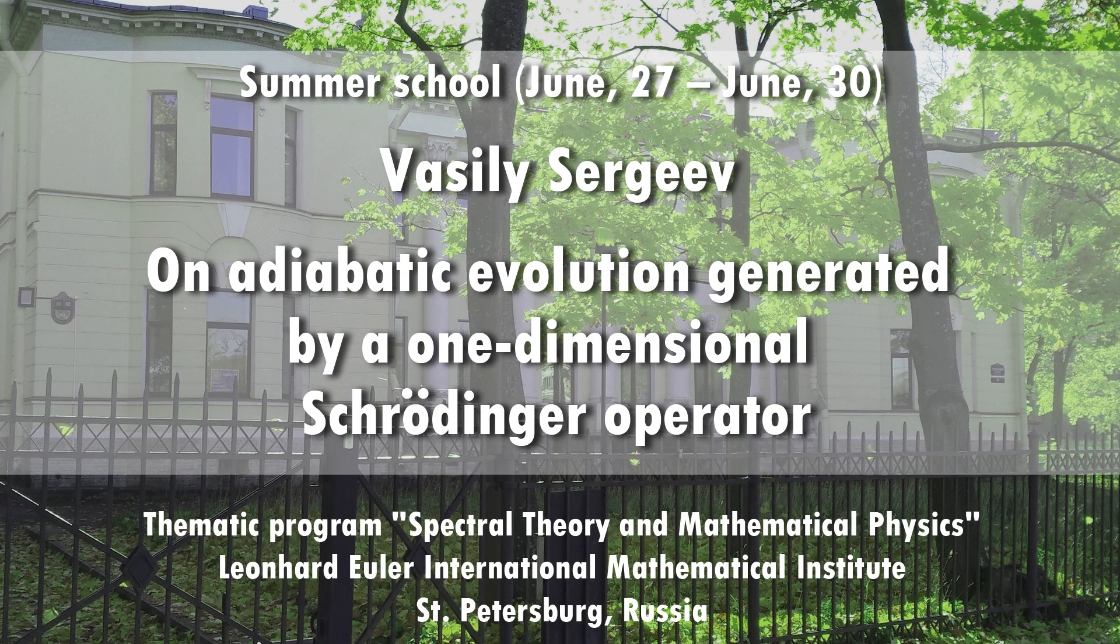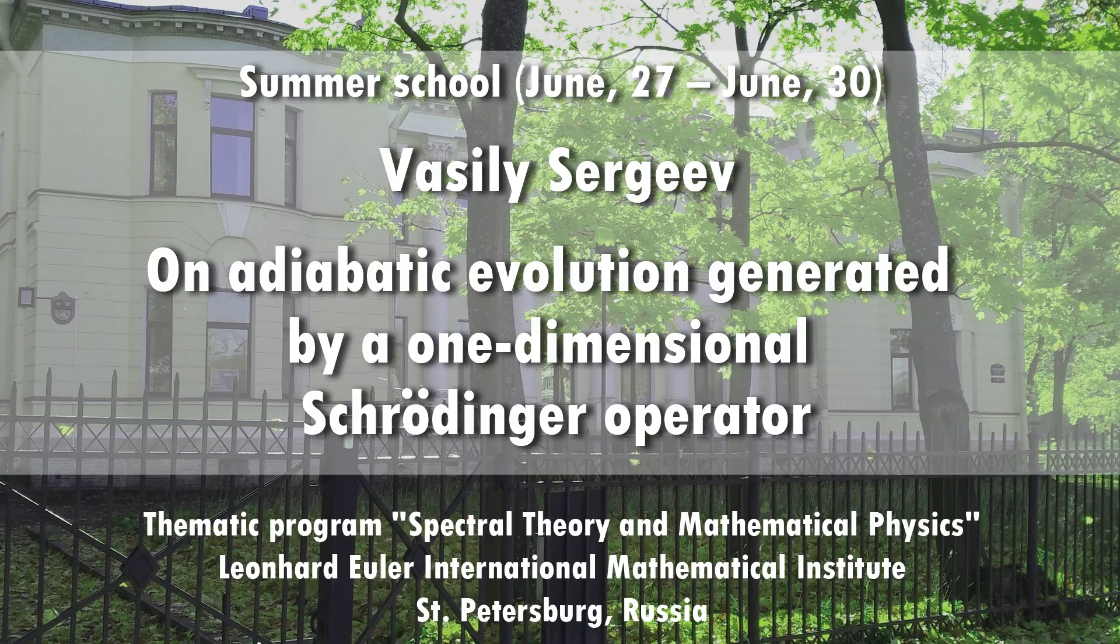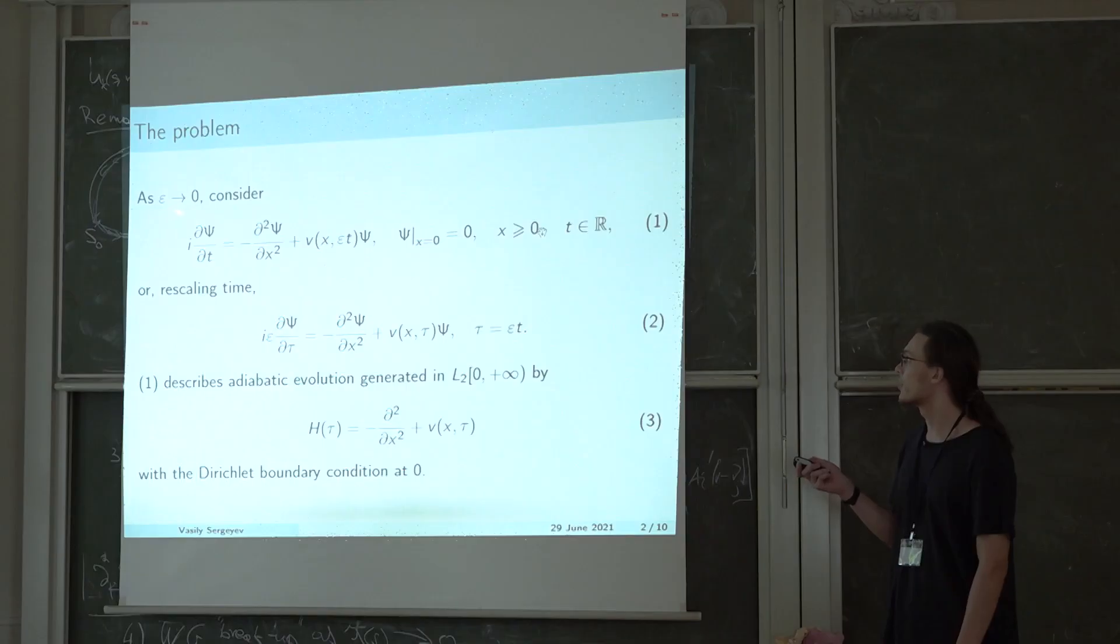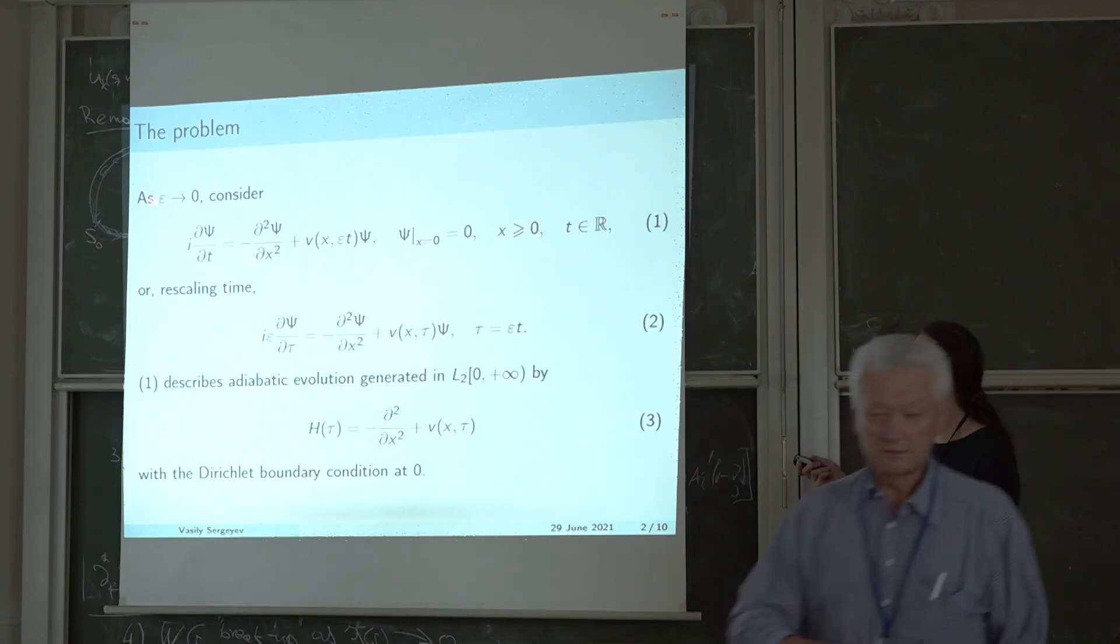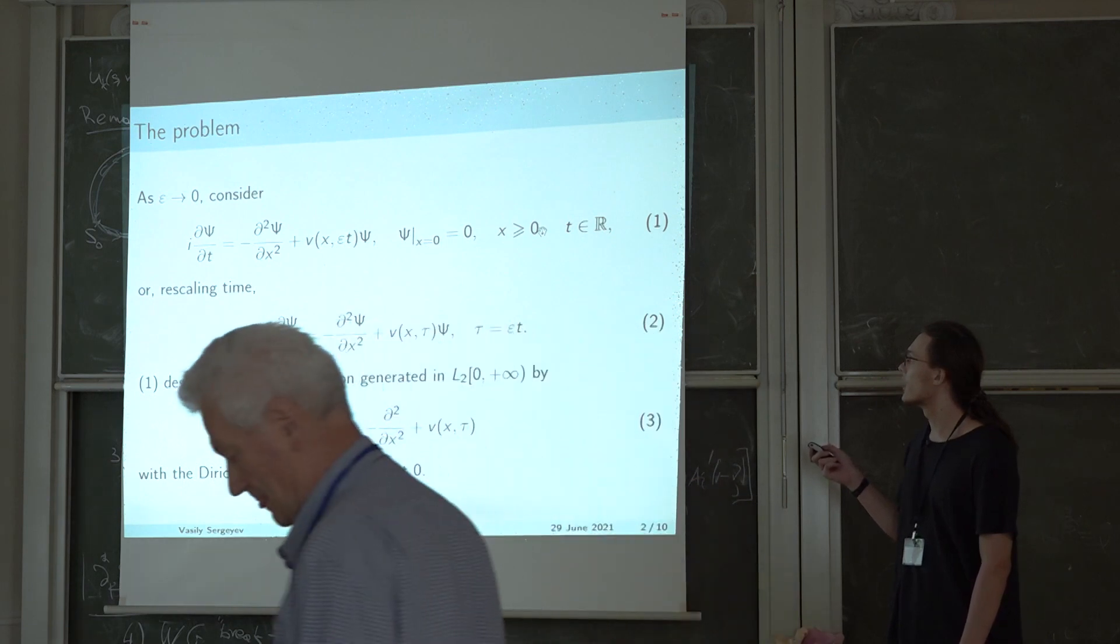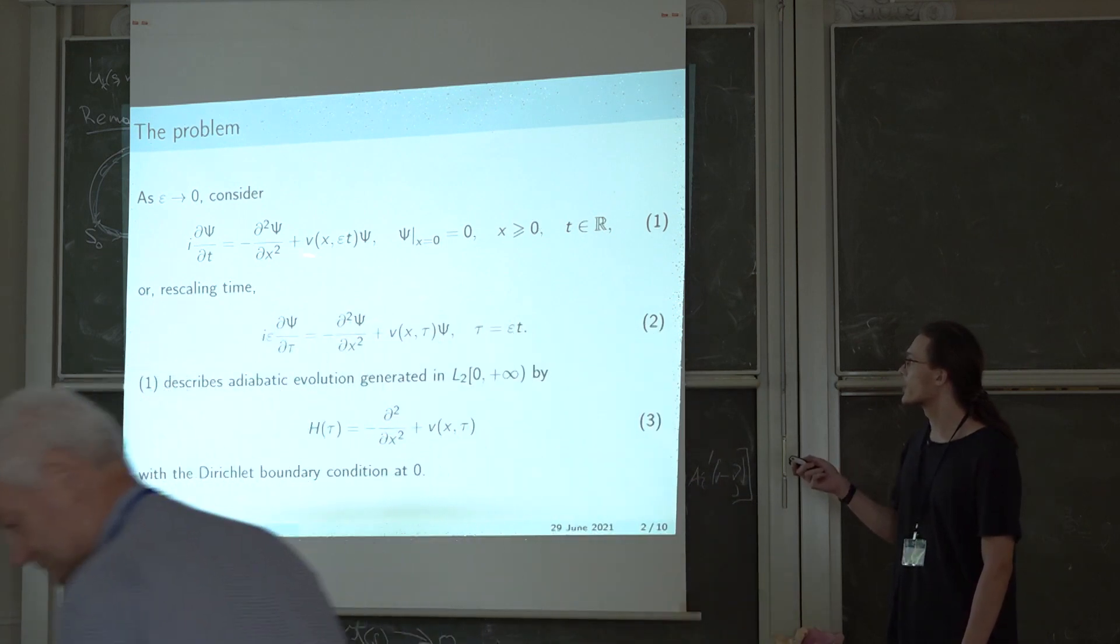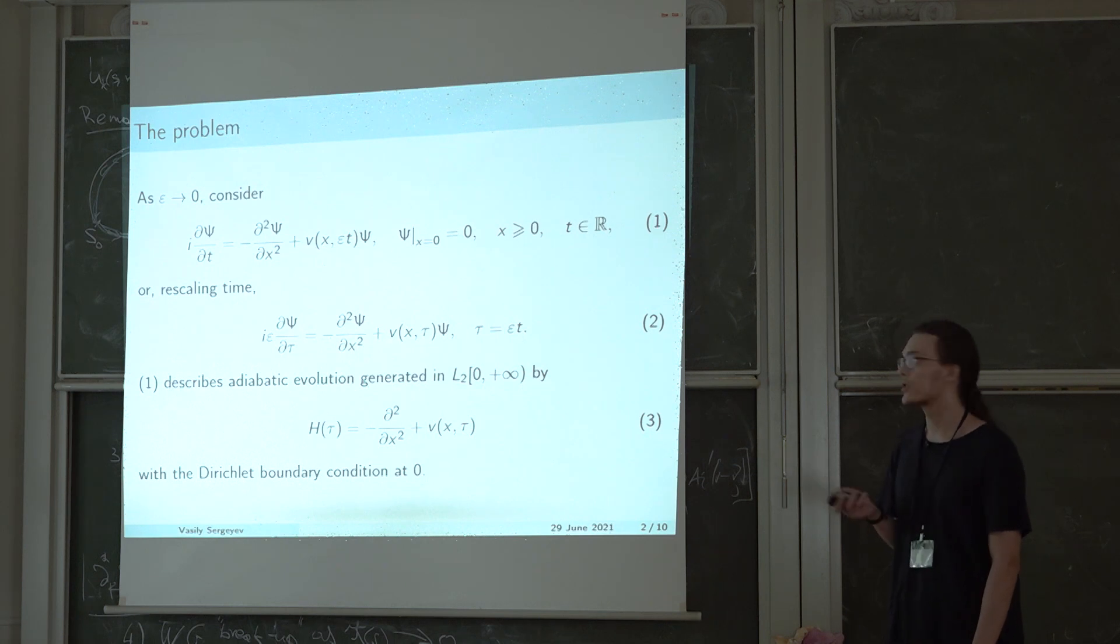We consider the Schrodinger equation given by formula 1 as parameter epsilon tends to 0. The potential in this equation changes slowly with time, which is indicated by the presence of the small parameter epsilon here in the second argument.